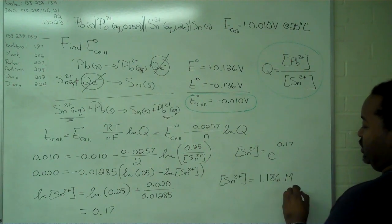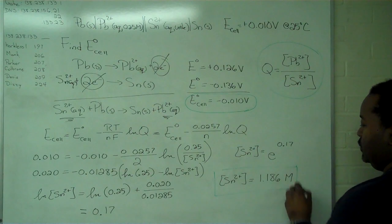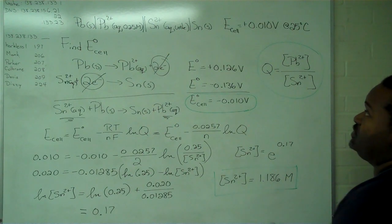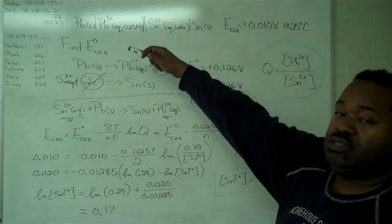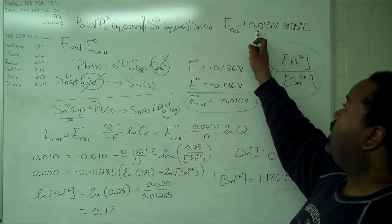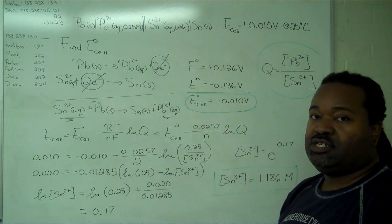This is our final answer: the concentration of tin necessary for this voltaic cell to have this cell potential.